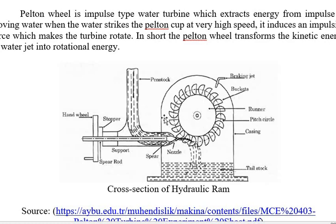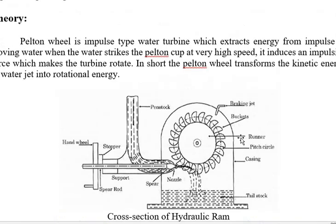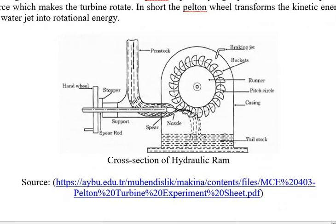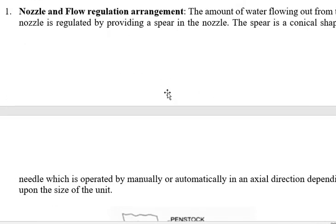The main energy source is the pressure energy possessed by the water. It is converted into kinetic energy at the outlet of the nozzle, then turns the wheel and is converted into rotational energy. The rotational energy turns the shaft, producing mechanical energy, which is then converted into electrical energy through the generator. There is a conversion of energy at every step.